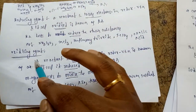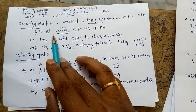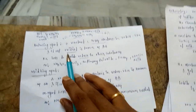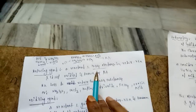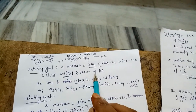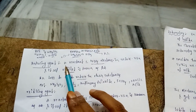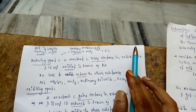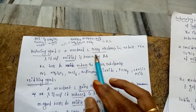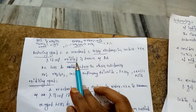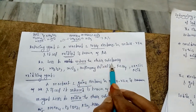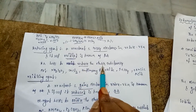Reducing agent means a reactant which loses electrons in a redox reaction, and itself is oxidized — that is known as a reducing agent. It is ready to lose electrons in the redox reaction. Losing of electrons is known as the oxidation process. After losing electrons, itself it will be oxidized. Reducing agent helps to reduce the other substances.